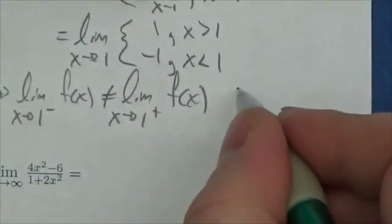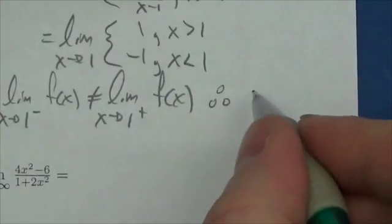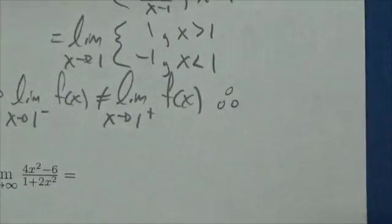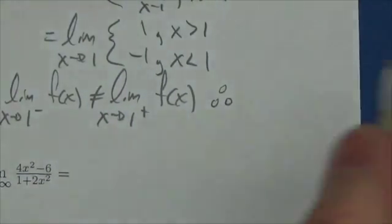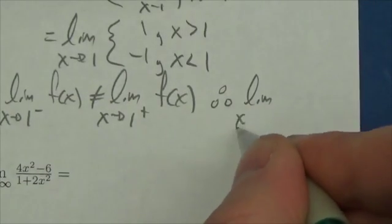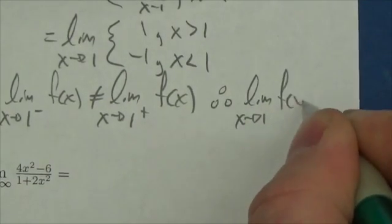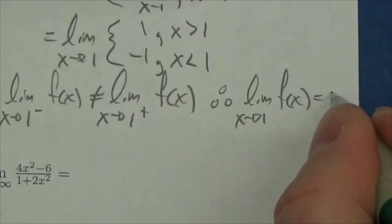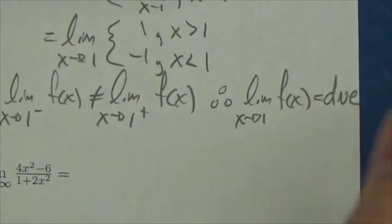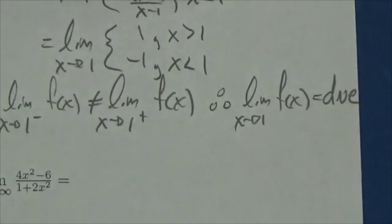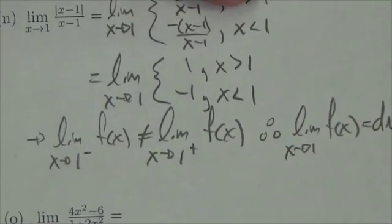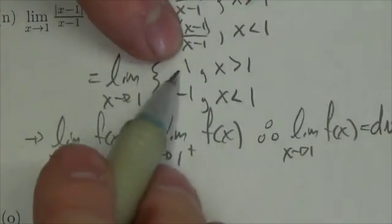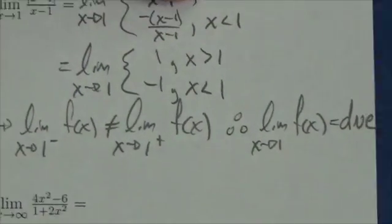Therefore, the limit as x approaches one of f of x—I'm just going to use this for my function—does not exist. Okay, they need to be the same from the left and the right, and in this case you can see quite clearly that they're not, so it does not exist.